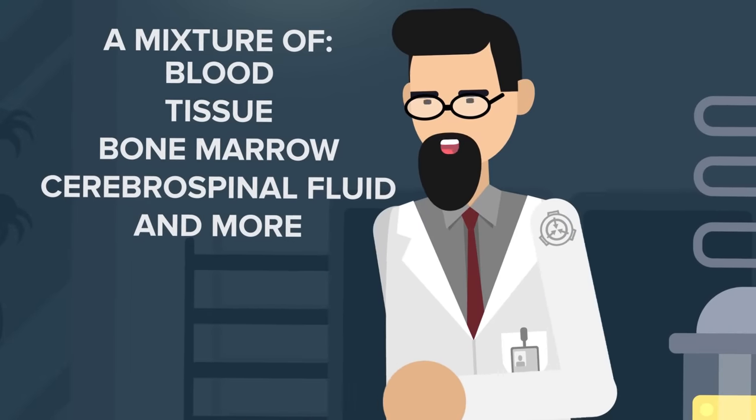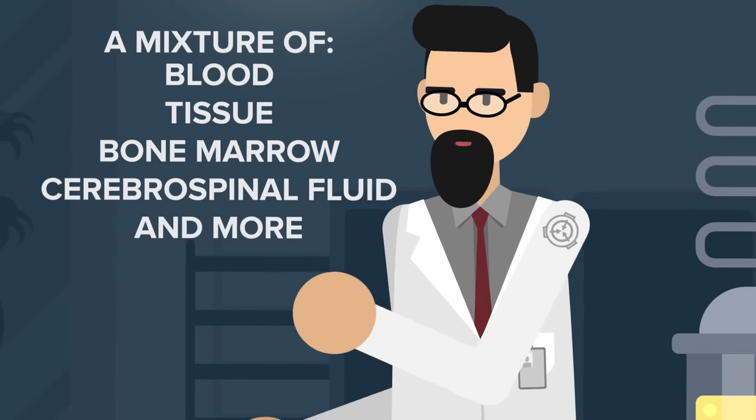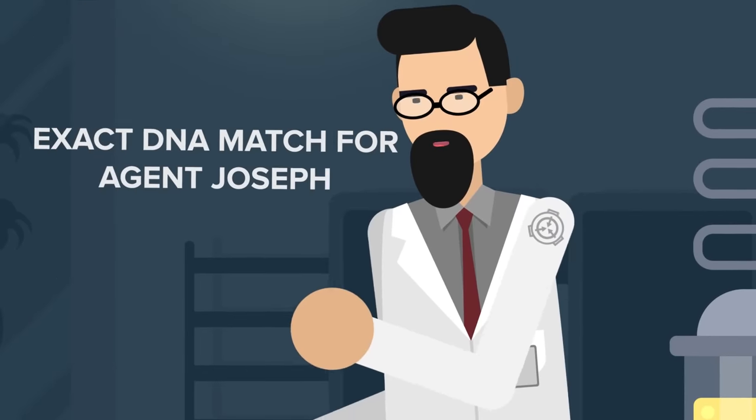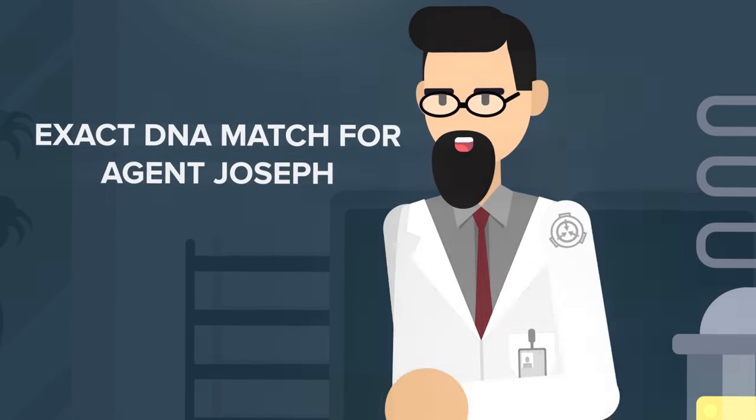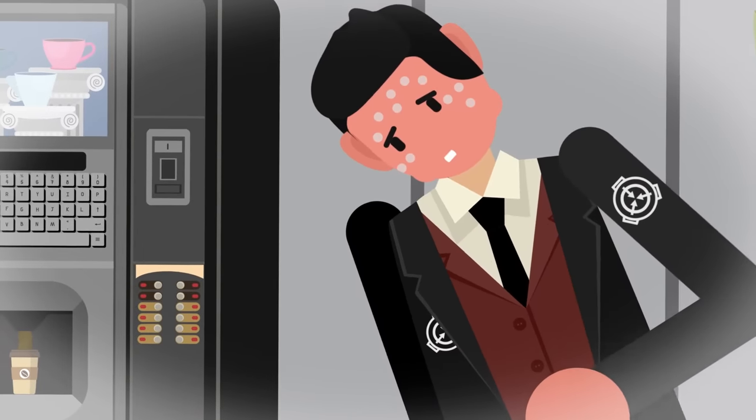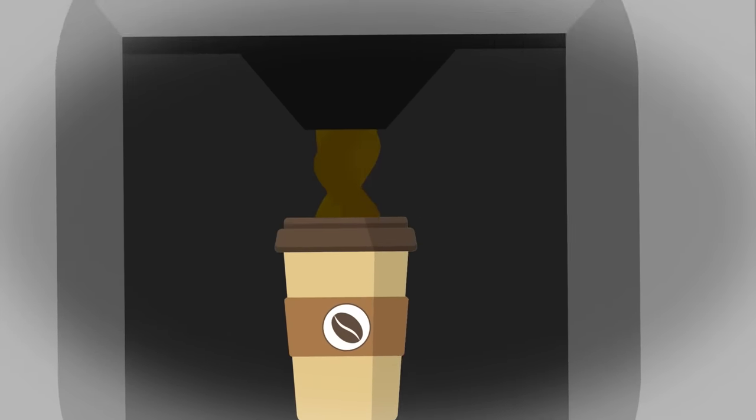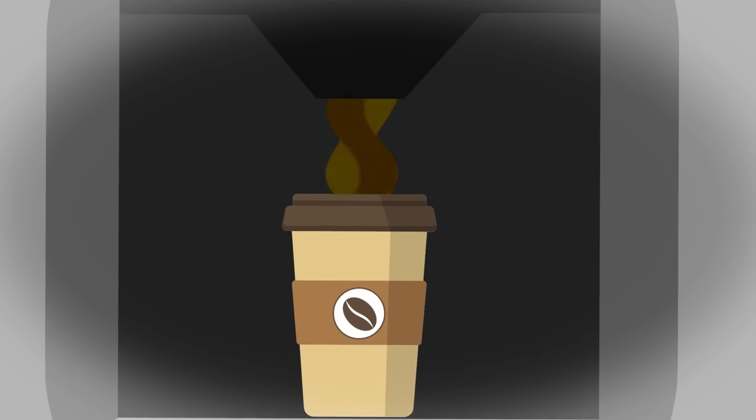A mixture of blood, tissue, bone marrow, cerebrospinal fluid, and other bodily fluids that was an exact DNA match for Agent Joseph. SCP-294 somehow managed to literally liquefy 12 ounces from the agent's body before producing them into a cup.